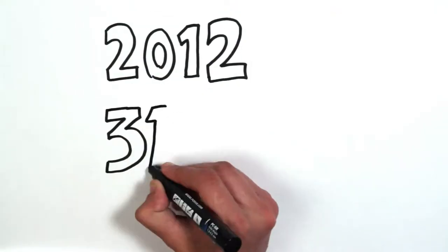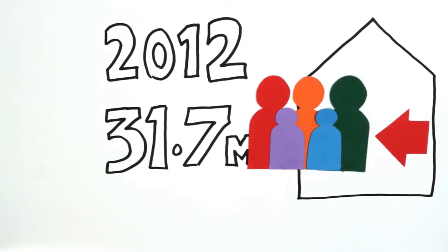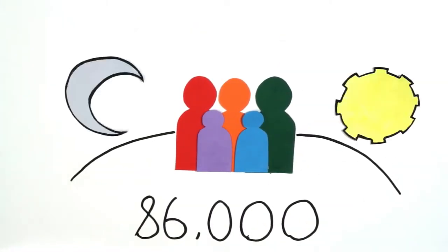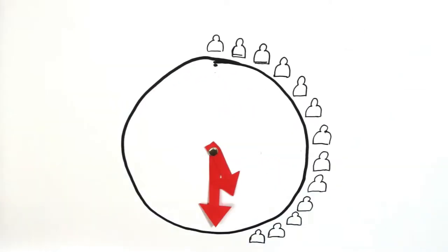In 2012, storms and floods forced 31.7 million people from their homes. That's 86,000 people each day, or one person every second.